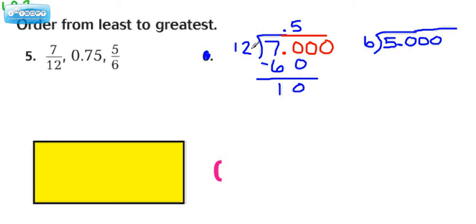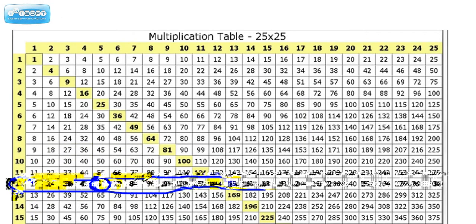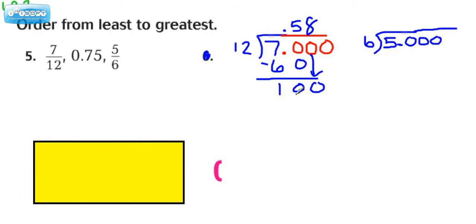Check to make sure that your difference is less than your divisor, and it is. Bring down the next 0. Let's think of our multiples of 12 again. We're looking at this one right here, this one's too big. So that's going to be times 8. Subtract. Now you may be wondering, is this going to work out evenly, and if it doesn't, when is it okay to stop dividing?